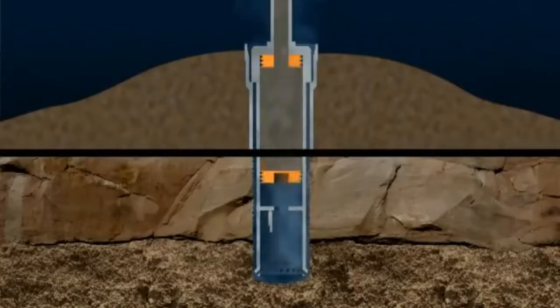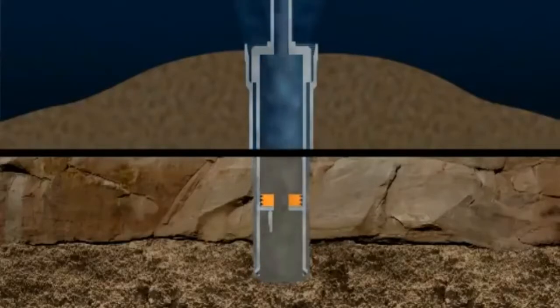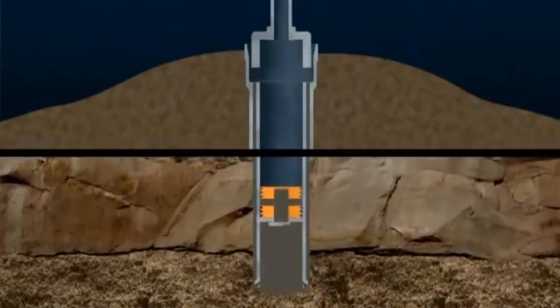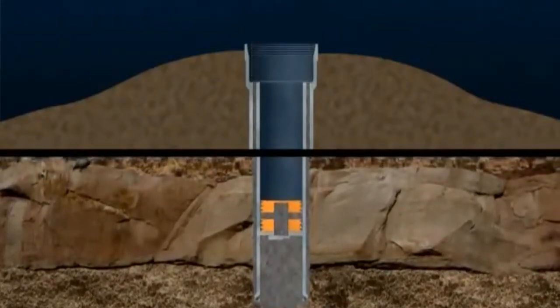On reaching the float collar, this plug is ruptured and cement flows out of the bottom of the conductor and up the annular space between the wellbore and the conductor. The cement plug tool is removed, and when the cement has set, drilling continues with a smaller diameter bit.